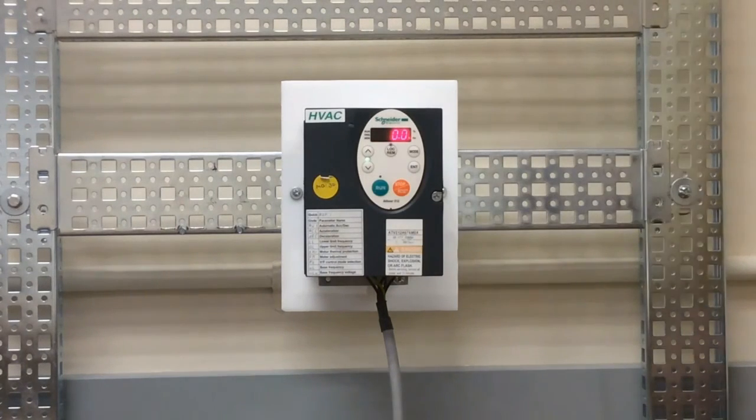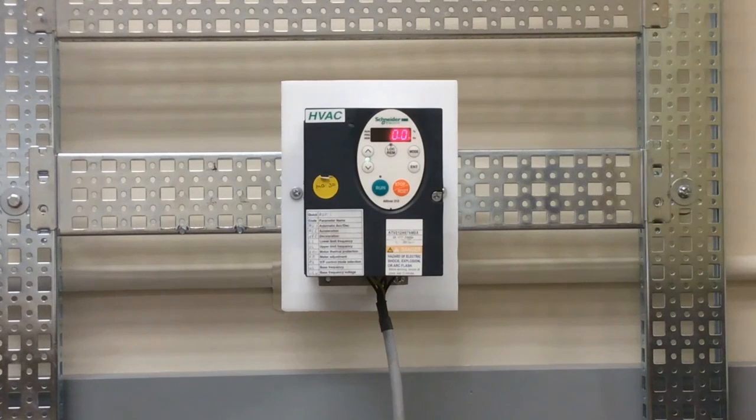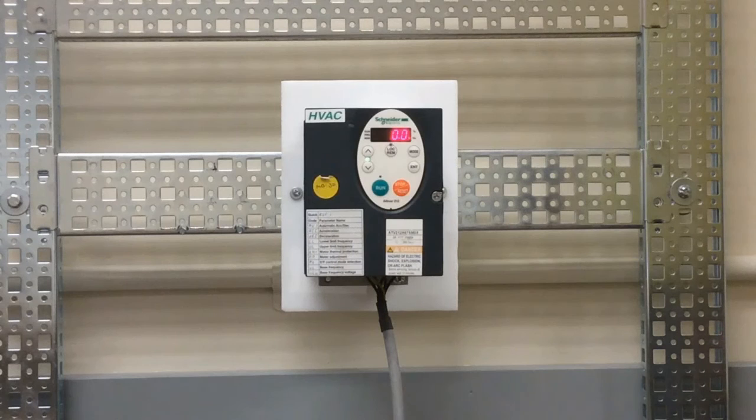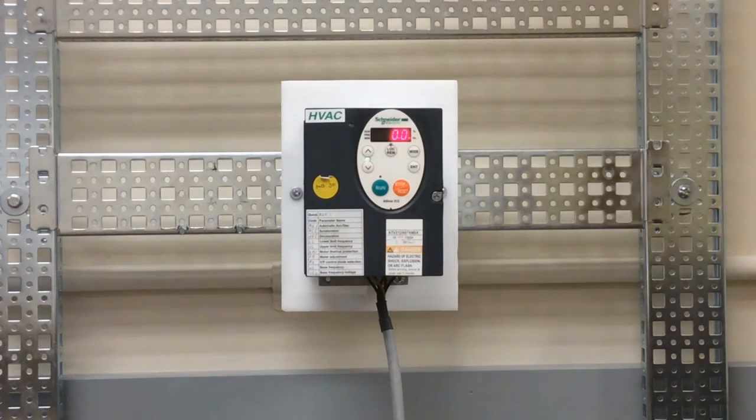Then you press enter, and next time you run the drive, it will know that your set point is basically fifty percent of your full range. This video showed you how to set an ATV212 drive to run using PID control.